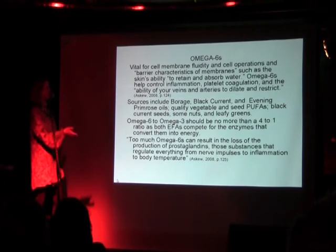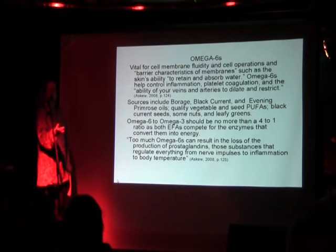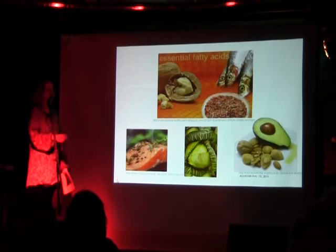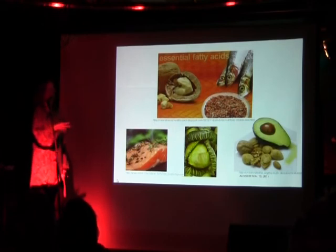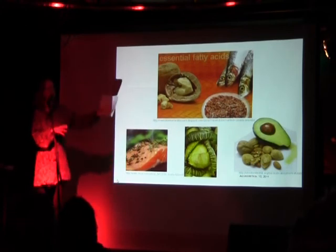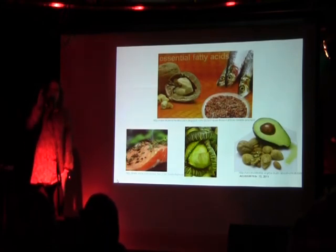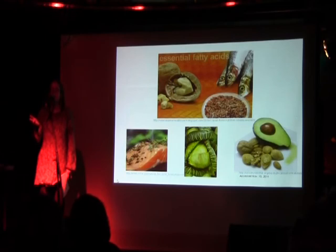Too much omega-6 can lead to loss of production of prostaglandins, which regulate everything from nerve impulses to inflammation to body temperature. Some healthy foods include nuts and fish. Remember, sushi is fabulous — once you cook fish you aren't actually getting the omega-3s. Raw fish is wonderful. Avocado is a wonderful source of omega-3s, and also has omega-6s and 9s. For people who say avocado is high calorie — those are calories your body uses and wants. Unless you have a severe obesity issue, avocado is absolutely wonderful for you. High calories, but brown fat — your body wants it.